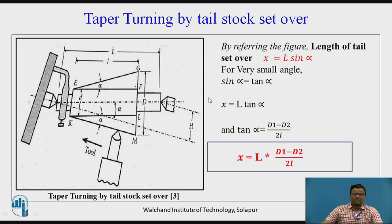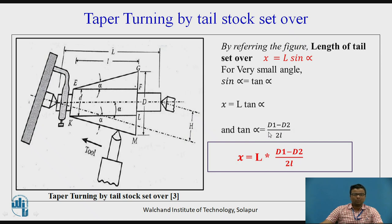The derivation for tailstock set-over: x = L·sin(alpha). Since alpha is very small, sin(alpha) ≈ tan(alpha), so x = L·tan(alpha). We also know tan(alpha) = (D1 − D2) / 2L, so substituting: x = L × (D1 − D2) / 2L, which gives x = (D1 − D2) / 2. Here x is the length of the tailstock set-over — the distance you slide the tailstock towards or away from the operator.